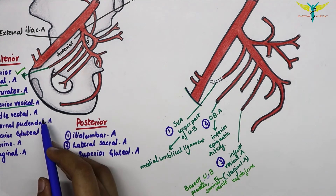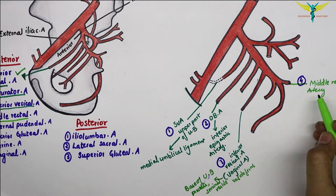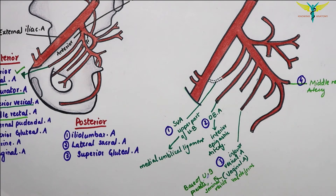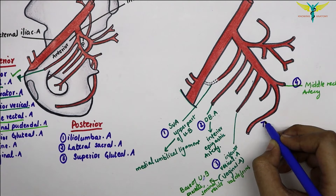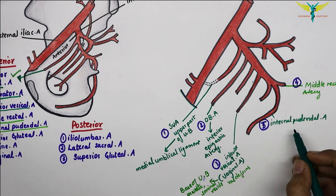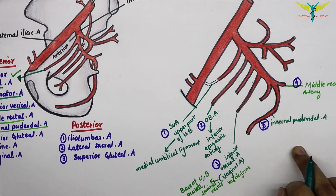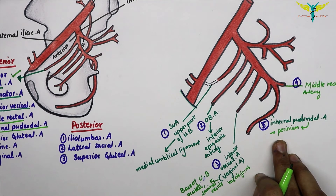The fourth artery is the middle rectal artery. It is a small branch which passes medially to the rectum and commonly arises with the inferior vesicle artery. The fifth branch is the internal pudendal artery, which is the main artery of the perineum. It leaves the pelvis through the greater sciatic foramen, passes over the posterior surface of the ischial spine, and enters the perineum through the lesser sciatic foramen.